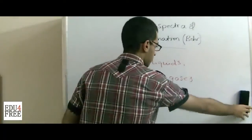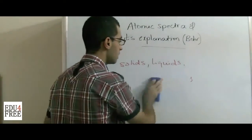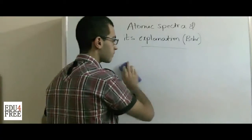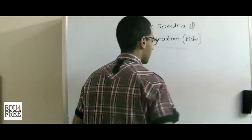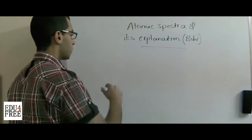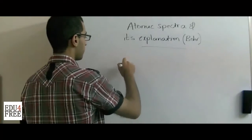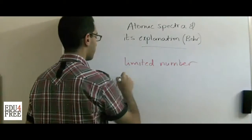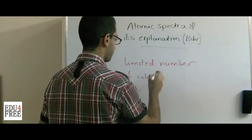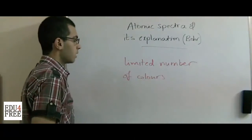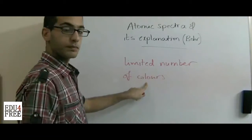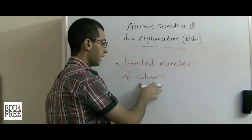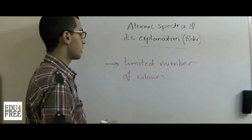But if gases are heated under a reduced pressure, and then the glimmering of these gases was examined by the spectroscope, it was seen that it consists of a limited number of colors. This limited number of colors defeats at certain angles, and this is called the atomic spectra.